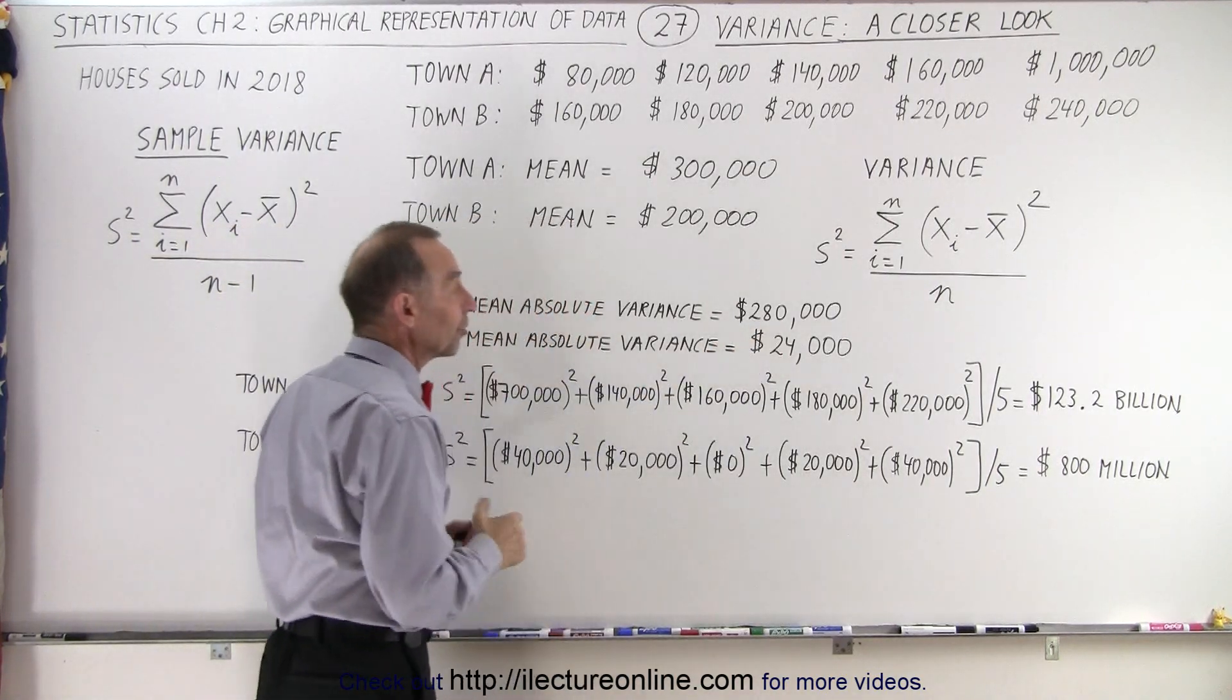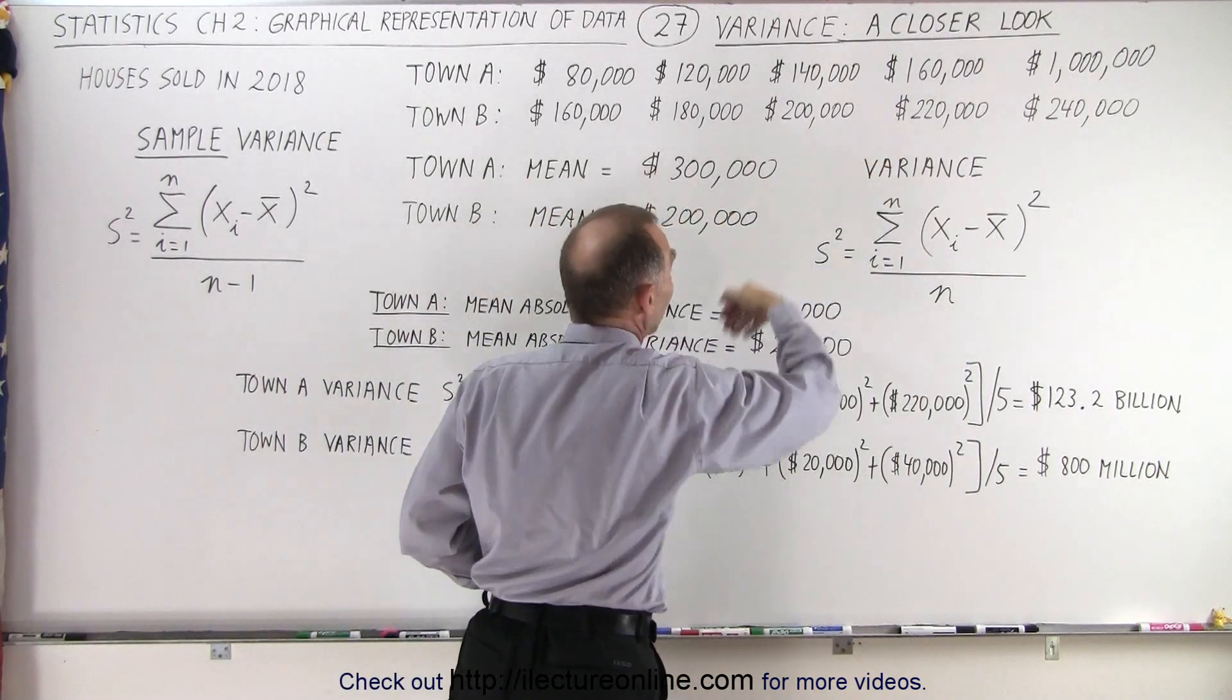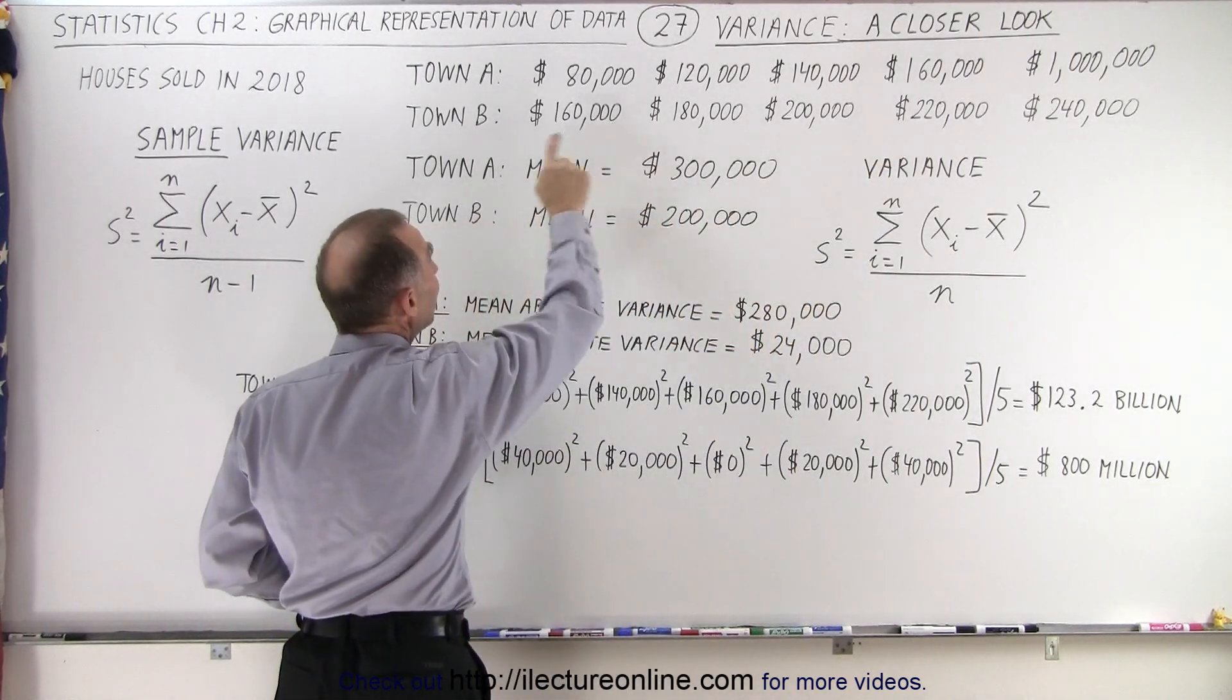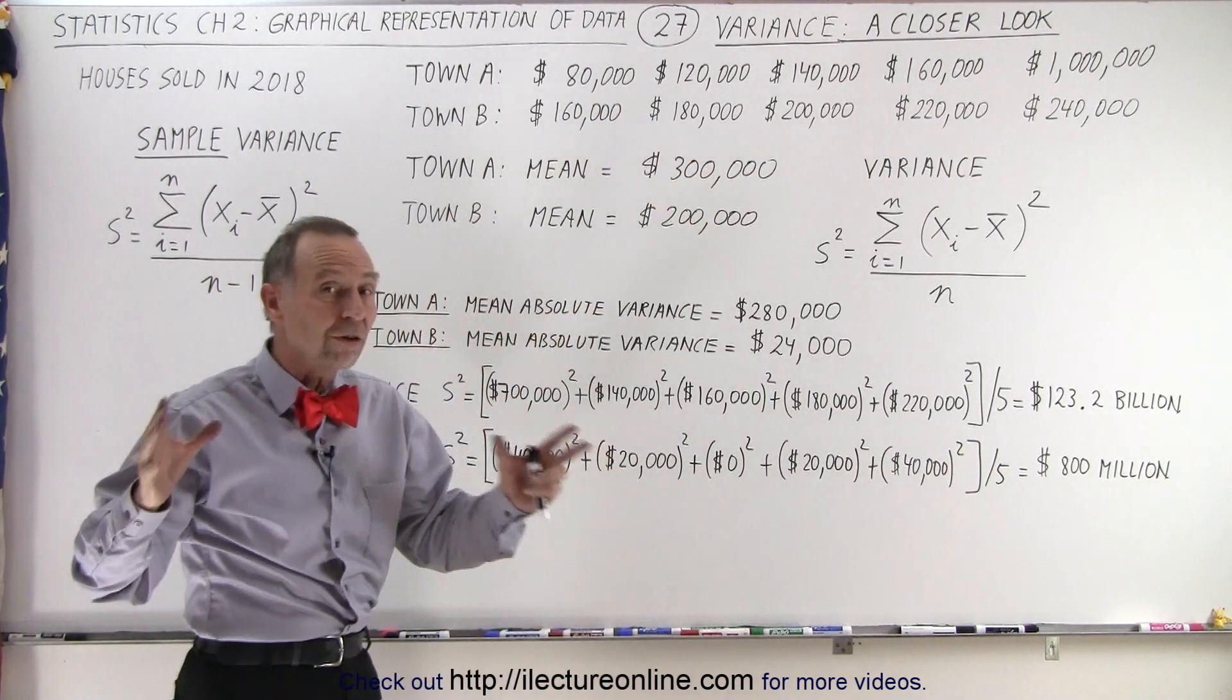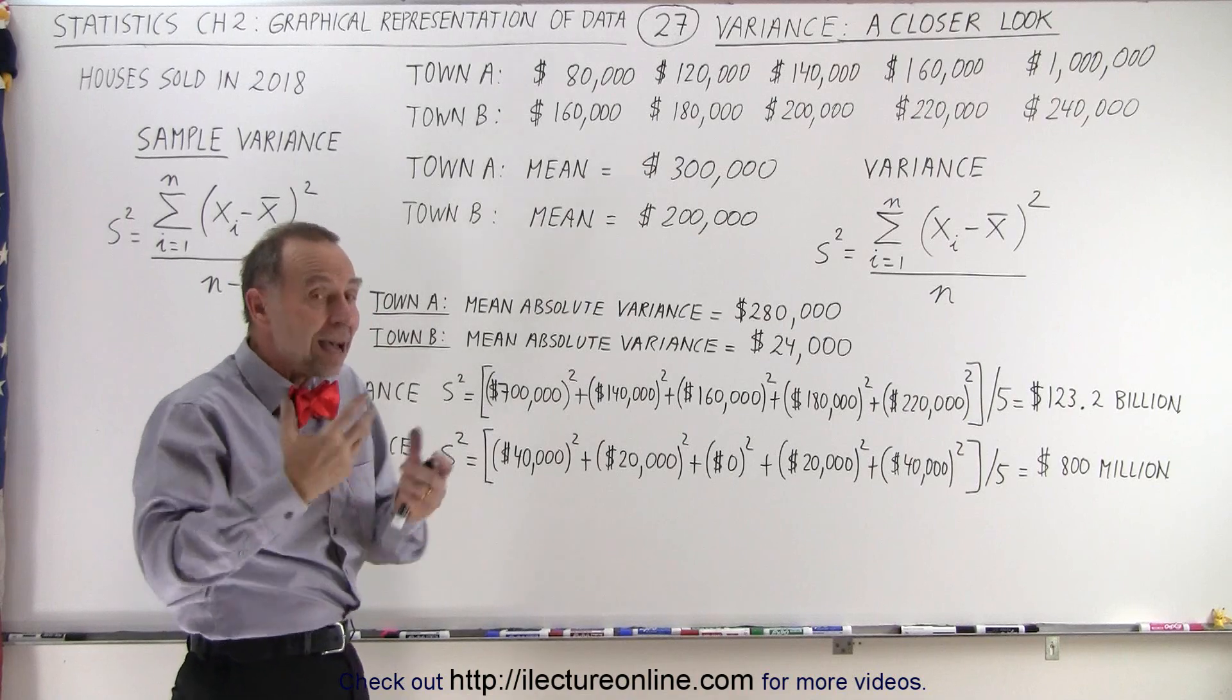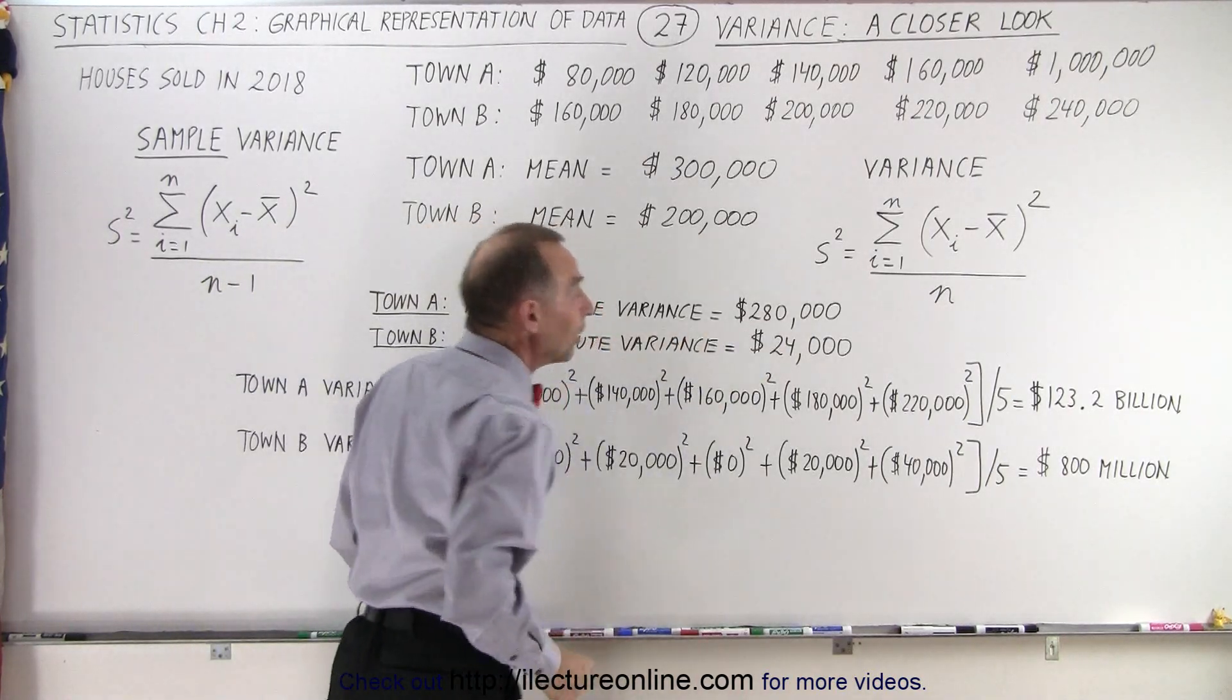Because notice the difference between the average and the really expensive house was $700,000. And even the cheaper houses, the difference between the cheaper houses and the average was a fairly large value as well. So the average or mean absolute variance was a very big number.